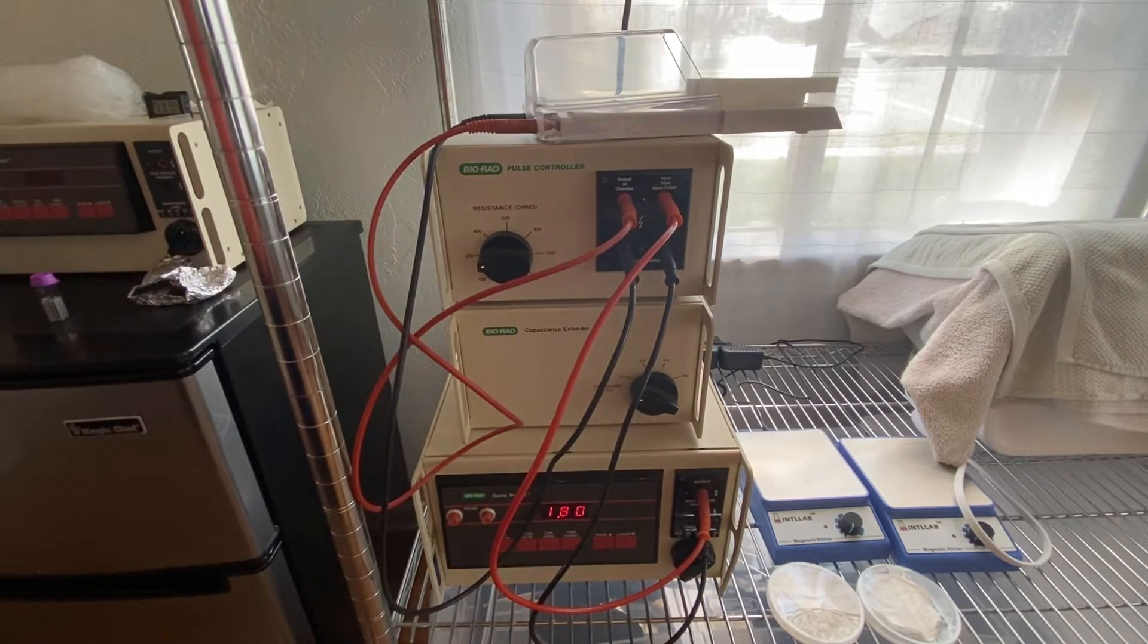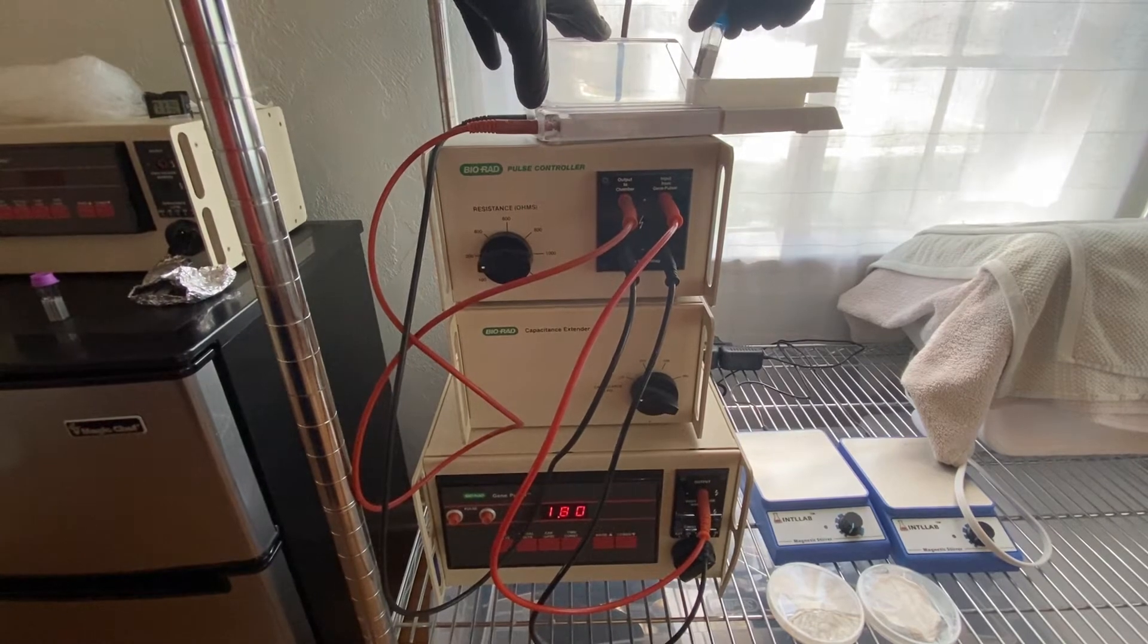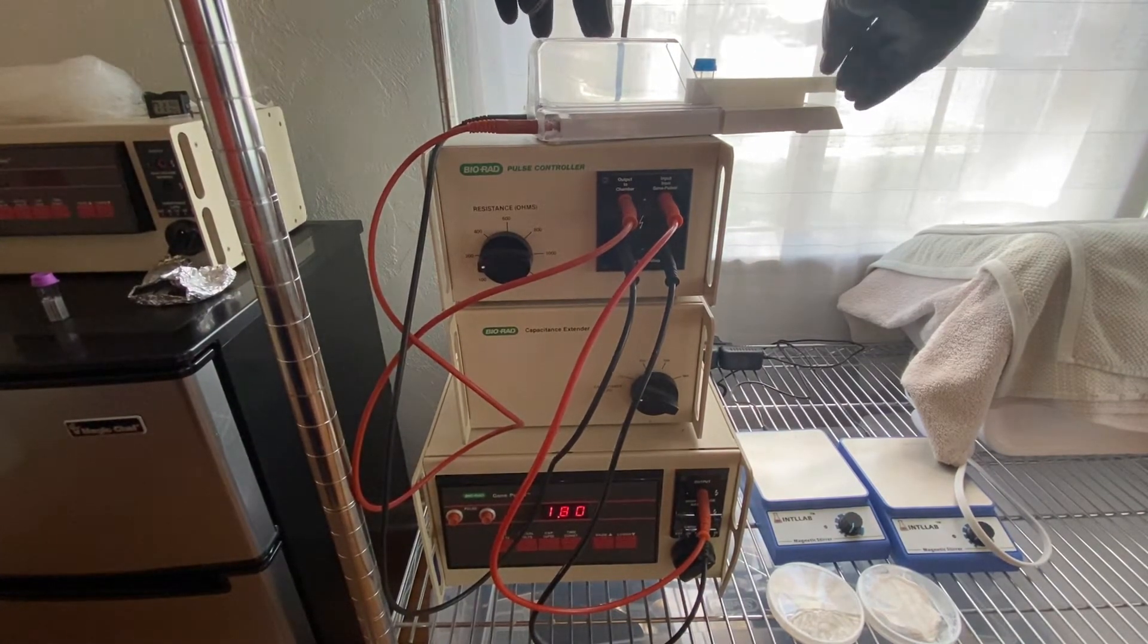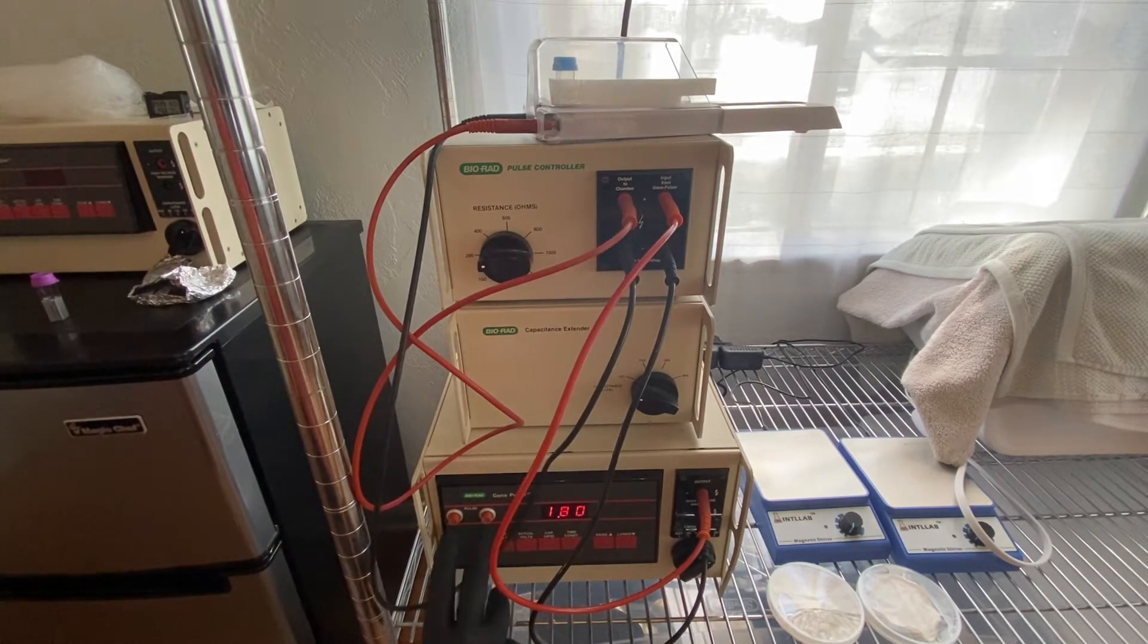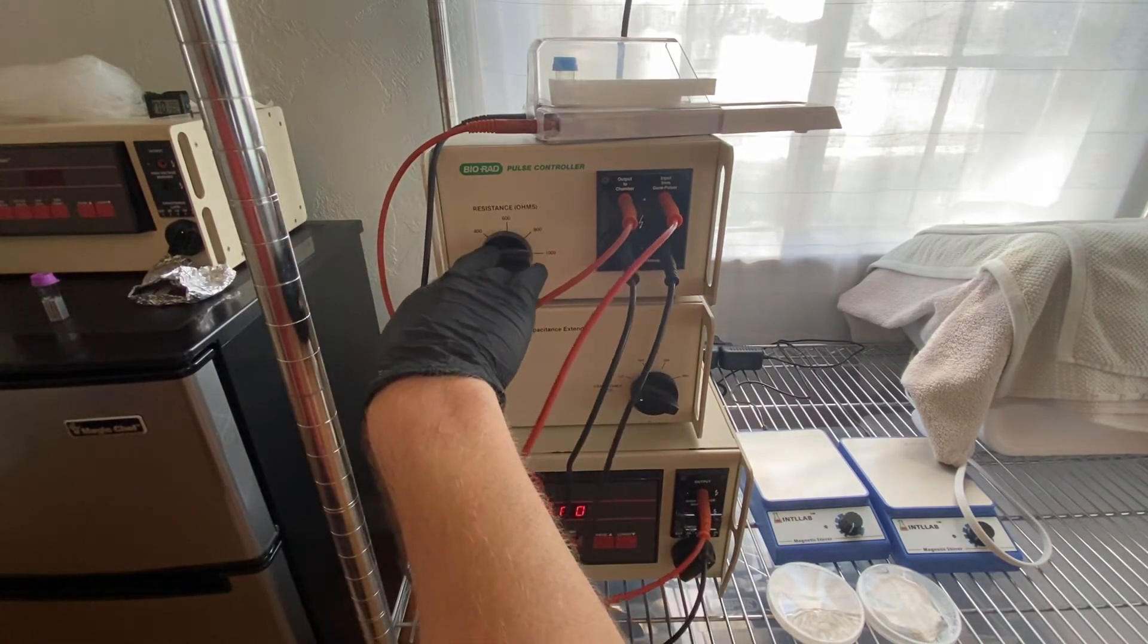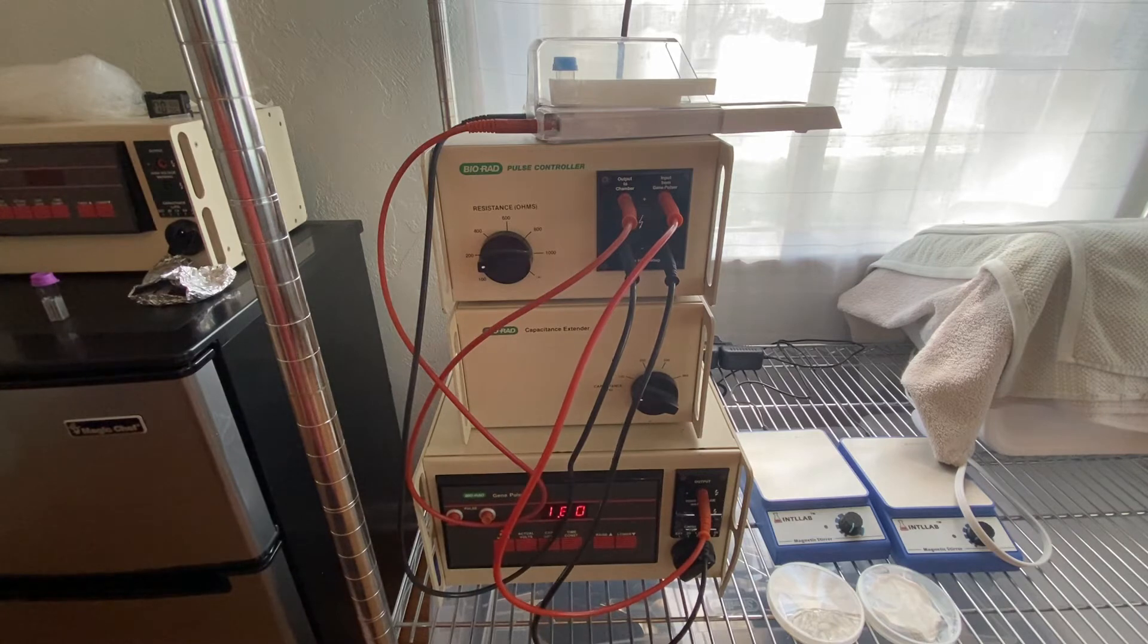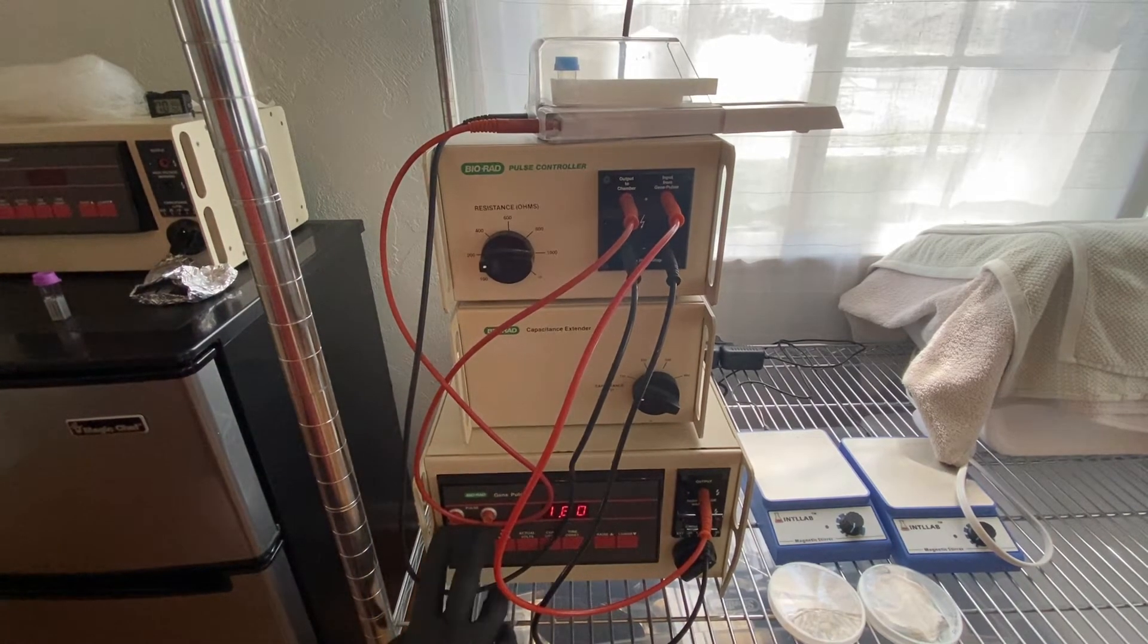So this is the old one. This is the two millimeter cuvette. There's only one way you can put that in there. All right, let's try it. 1.8, 25, 200 for the resistance. We're not using the capacitance extender. Let's give it a shot.